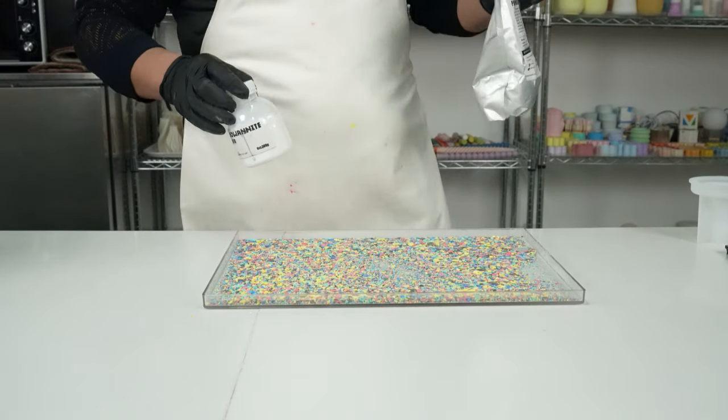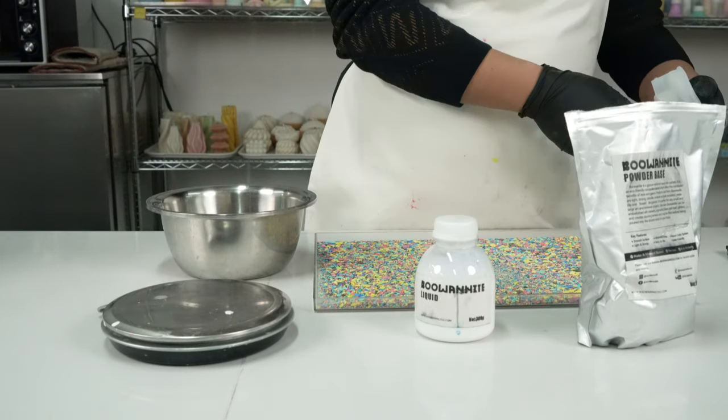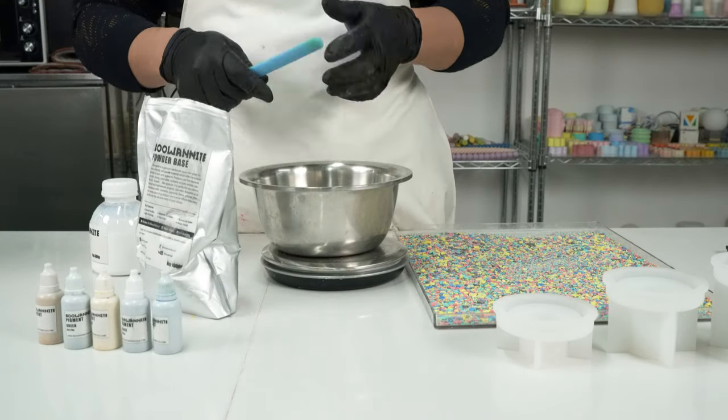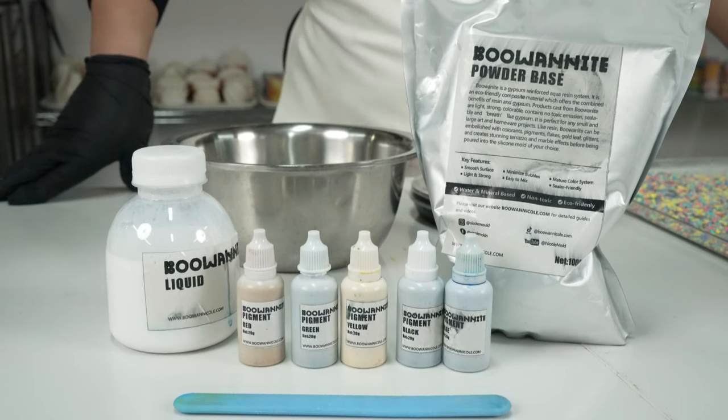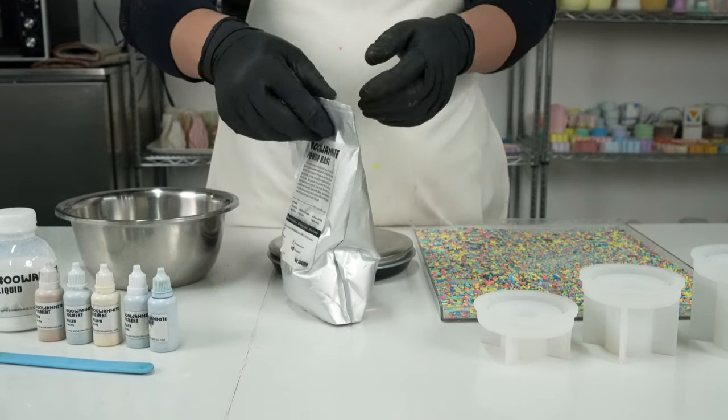The Jesmonite kit includes AC-100 alternative base powder, five pigment colors, water-based acrylic liquid, lollipop sticks, paper cups, a large silicone spatula, sander, sandpaper, and gloves. With these tools, you can begin to experiment and create unique Jesmonite pieces.